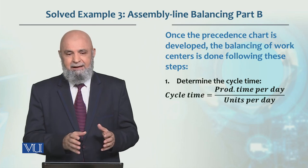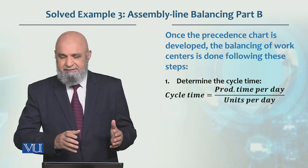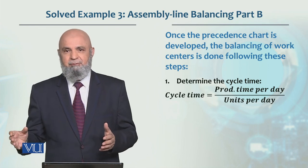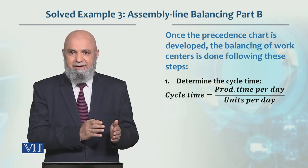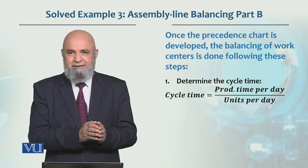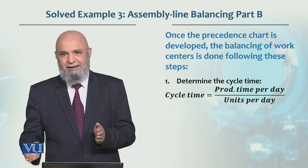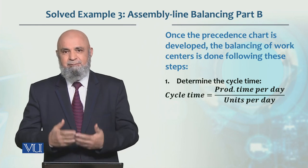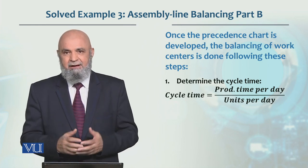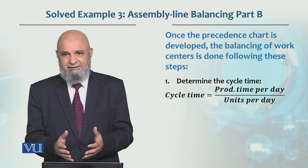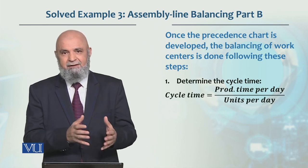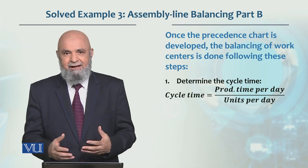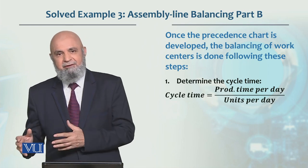مطلب یہ ہے کہ assembly line کے اوپر کئی units different work centers کے اوپر موجود ہوں گے۔ ہم نے یہ دیکھنا ہے کہ ایک unit جب line سے باہر نکلا ہے تو اس کی کتنی دیر کے بعد دوسرا unit باہر نکل رہا ہے — that is basically the cycle time۔ یہی ہمارے production rate کو determine کرتا ہے۔